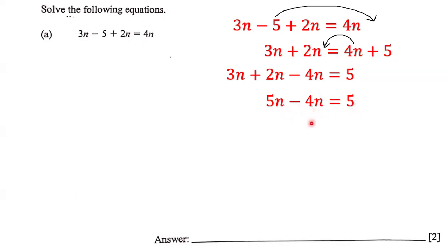5n minus 4n is simply n, and so that means the answer to this equation is n equals 5. That's our answer: n equals 5.